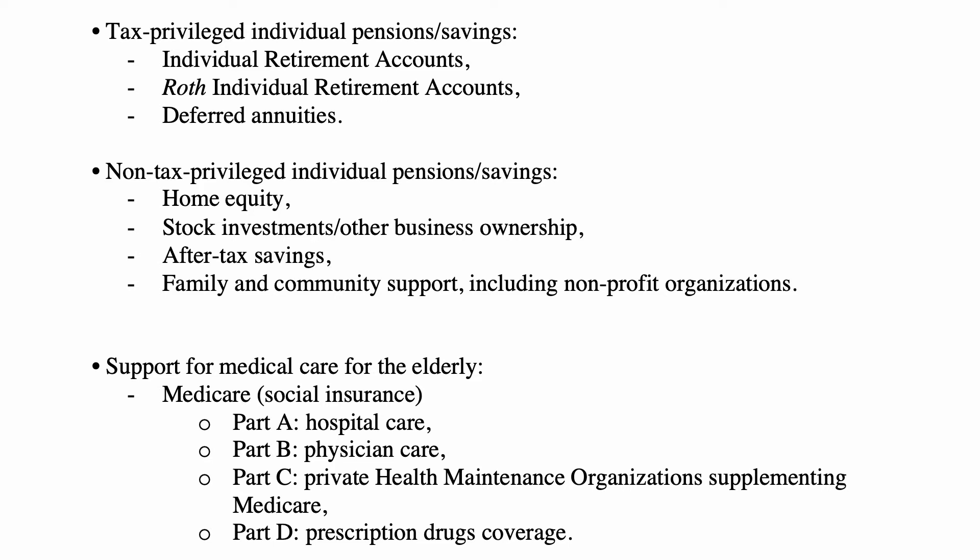There are also deferred annuities with insurance companies, where you put money into an account, it grows tax-free, but the contribution itself is not tax-free. When you start taking money out, there is a complex calculation of what portion is not taxable — because the contributed money was already taxed — and what portion should be taxed, representing the tax-free growth that occurred while the money was with the insurance company.